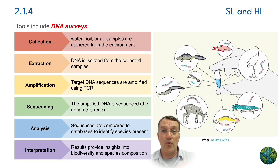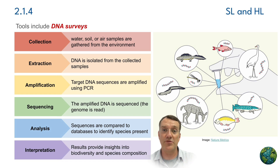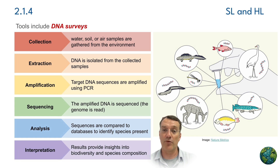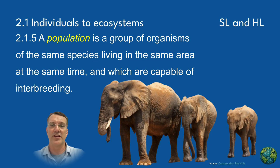and then extract tiny microscopic bits of DNA. We amplify and multiply it, then compare the genome sequences to libraries of DNA samples around the world, and we can figure out which species are present because they're leaving their DNA behind in the environment.